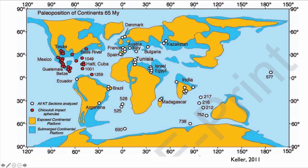In this map, you see in red the sites where you can find the spherules, and in white the sites where you don't. The spherules are concentrated close to the impact because they're relatively large — they could not fly all around the globe. But the fine iridium dust traveled much further. That's why the iridium layer in North Africa, in Tunisia, which was a shallow water location at the time, is visible and is a great marker that can be used worldwide.